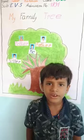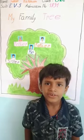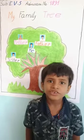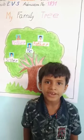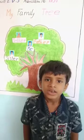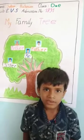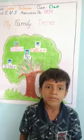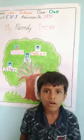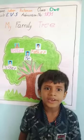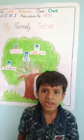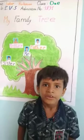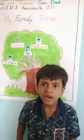A nuclear family is a small family consisting of parents and their children. A single parent family is one where one of the parents has the responsibility of raising the children.